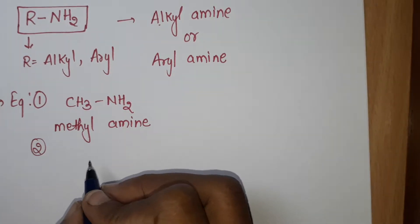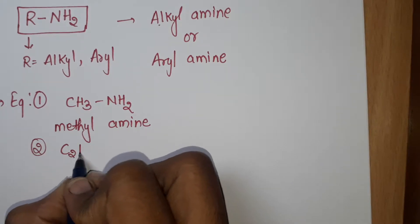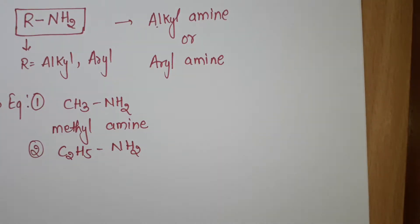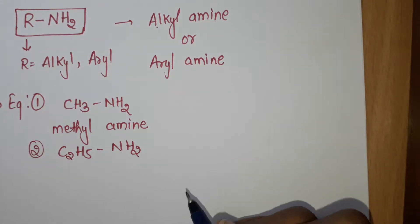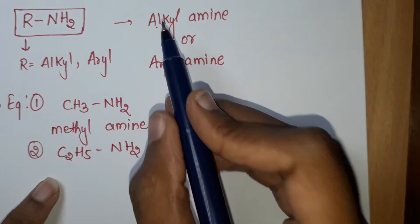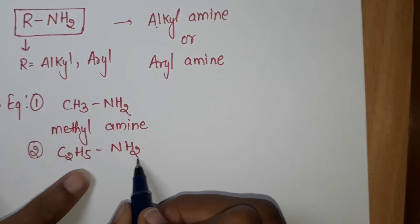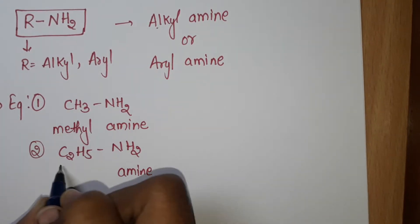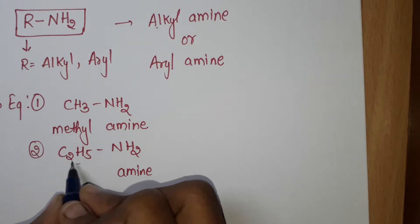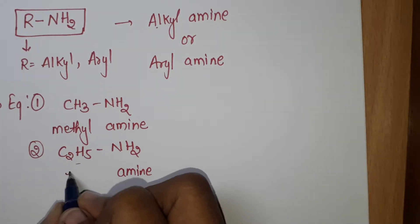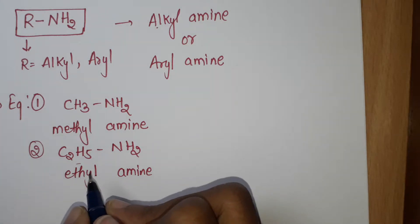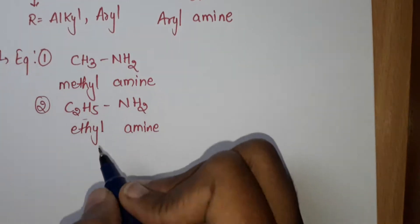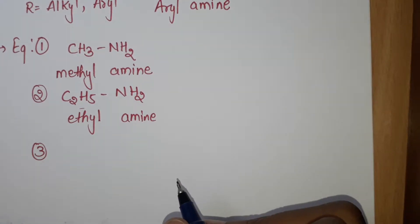Now another example: C2H5-NH2. What is the name of this compound? This part is alkyl and this one is amine. You have to know what C2H5 is — I think you all know this is ethyl. So the name of this compound is ethyl amine. Isn't it so simple?